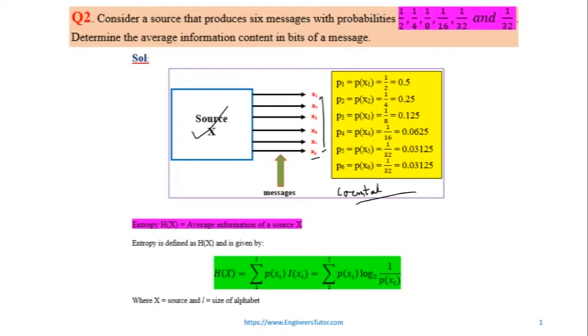We can count up to six, so that is why the source is discrete. So the probability of this message is given from 0.5 and so on. So entropy, the question is asking to find the average information of the source or messages. Average information of a source is given by entropy, and this is the formula to find entropy of the source.